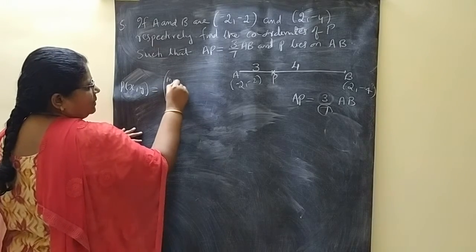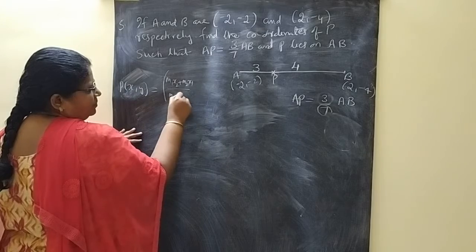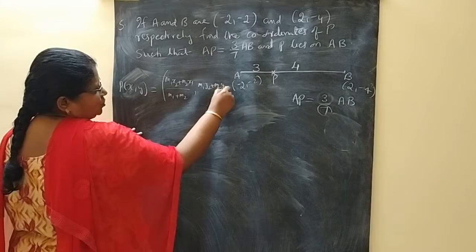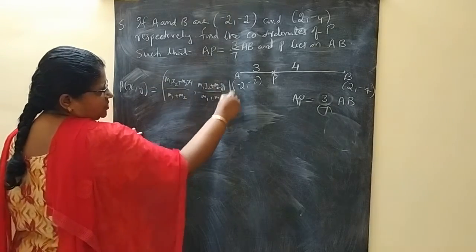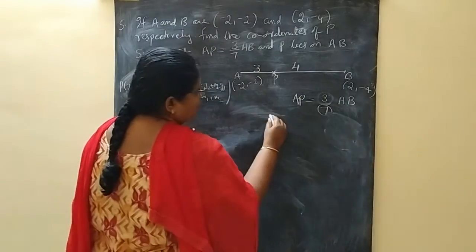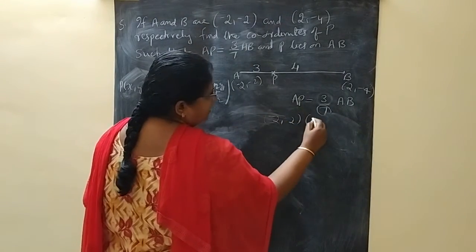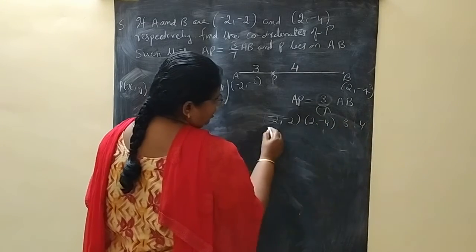Write the section formula: M1X2 plus M2X1 by M1 plus M2, M1Y2 plus M2Y1 by M1 plus M2. Write the points (-2, -2) and (2, -4) and ratio 3 is to 4.